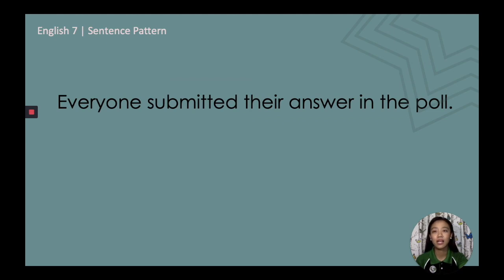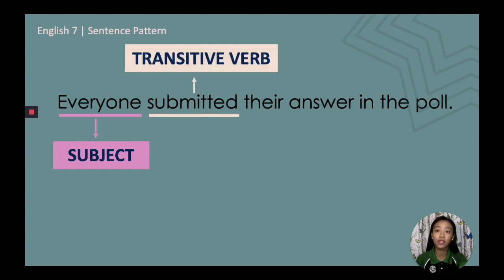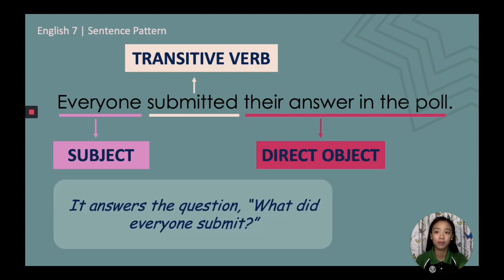'Everyone submitted their answer in the poll.' The subject is 'everyone.' The action verb is 'submitted.' And the direct object is 'their answer in the poll.' To identify the direct object, ask: what did everyone submit? The answer is 'their answer in the poll.'